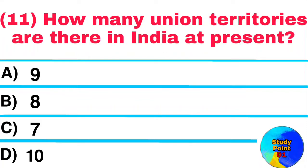Question: How many union territories are there in India at present? Answer: 8.